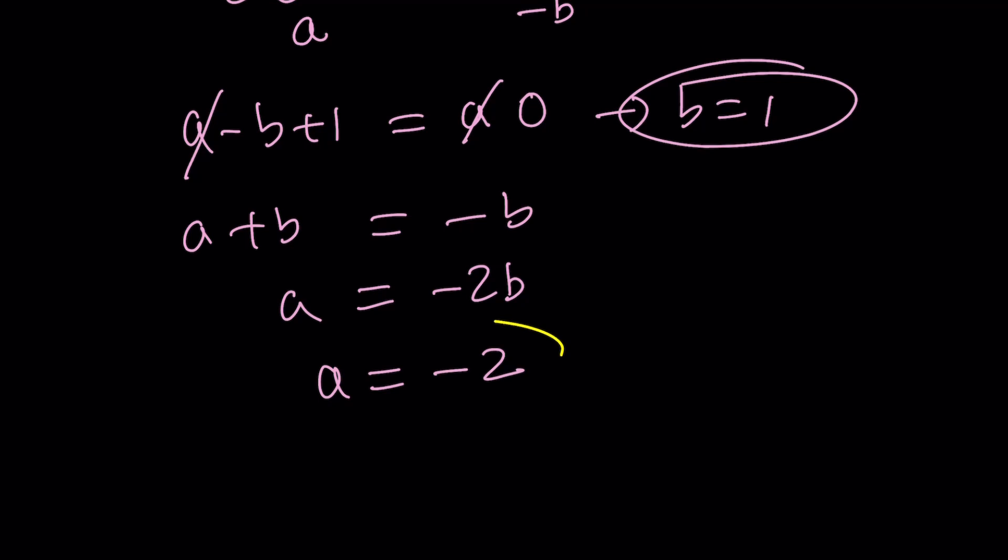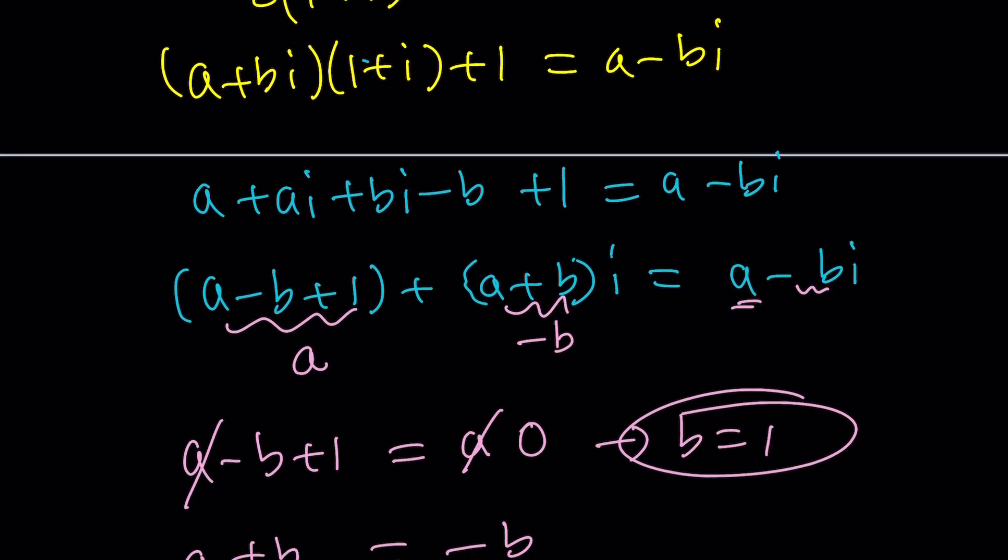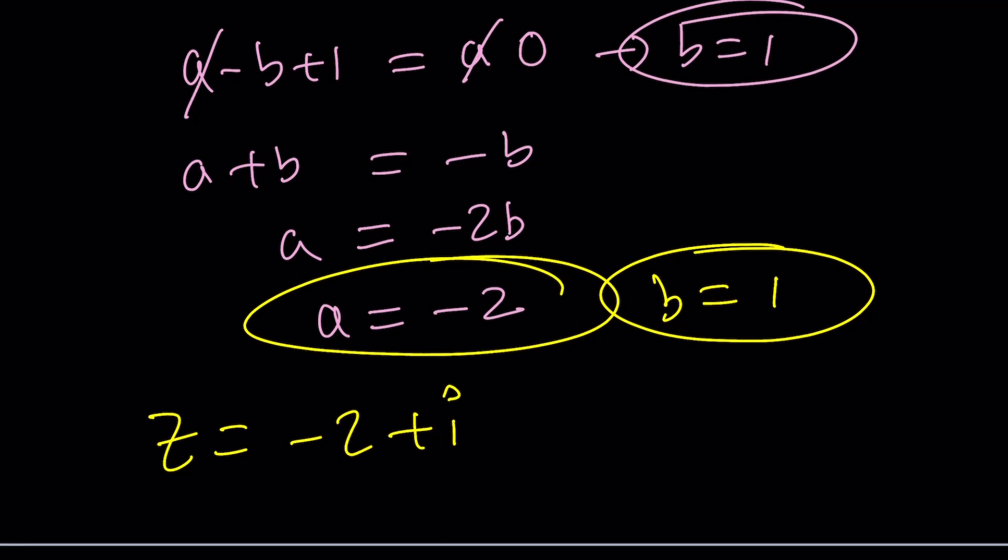But what is that supposed to mean? A is negative two, b is one, and z is a plus bi. So z is negative two plus i. Make sense? So we got the same answer. Of course, that would not be a surprise because we're doing the same problem.